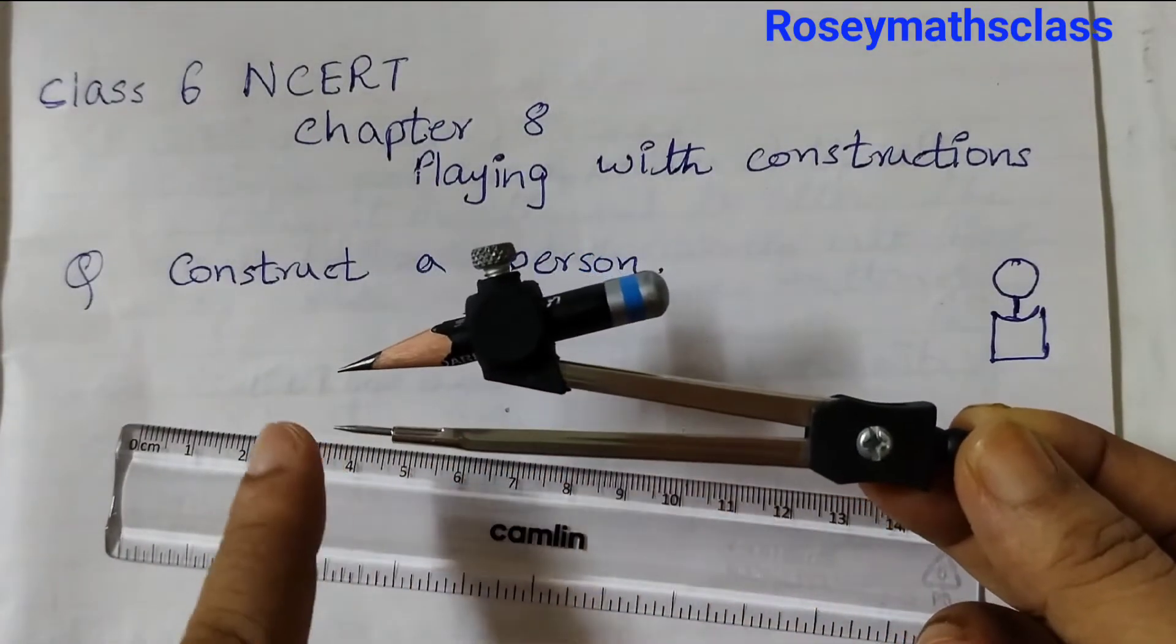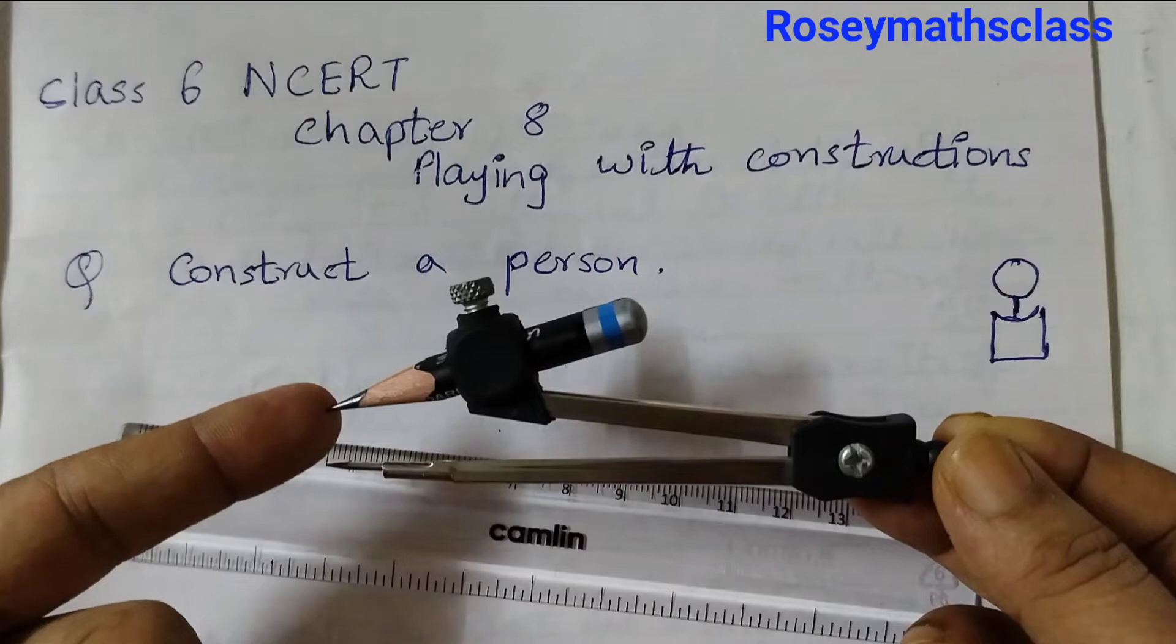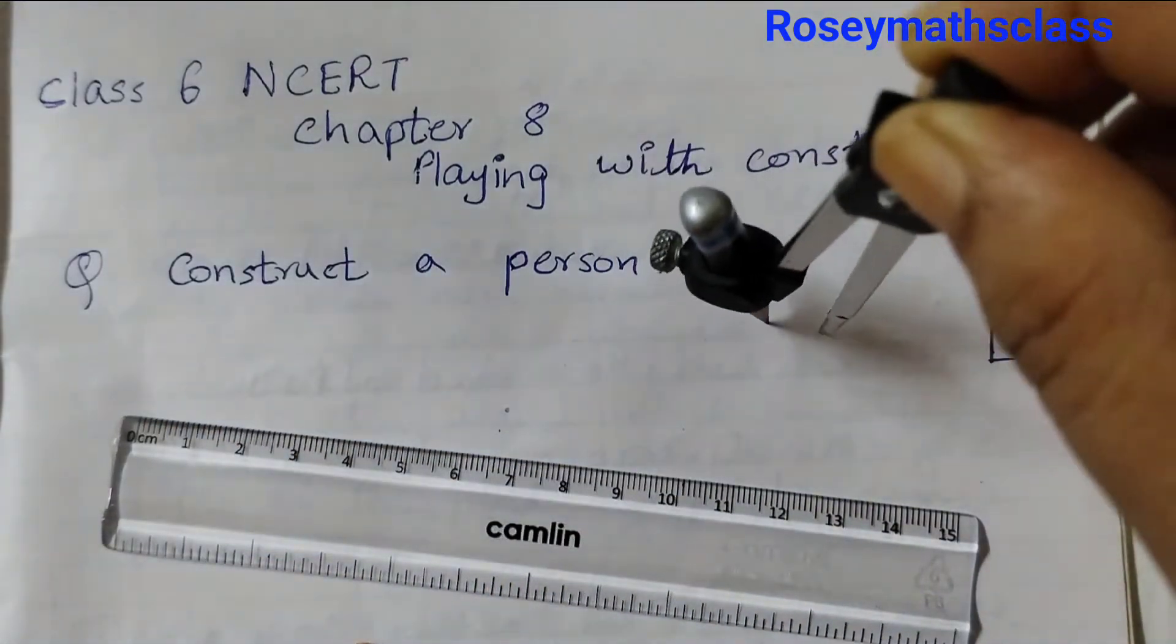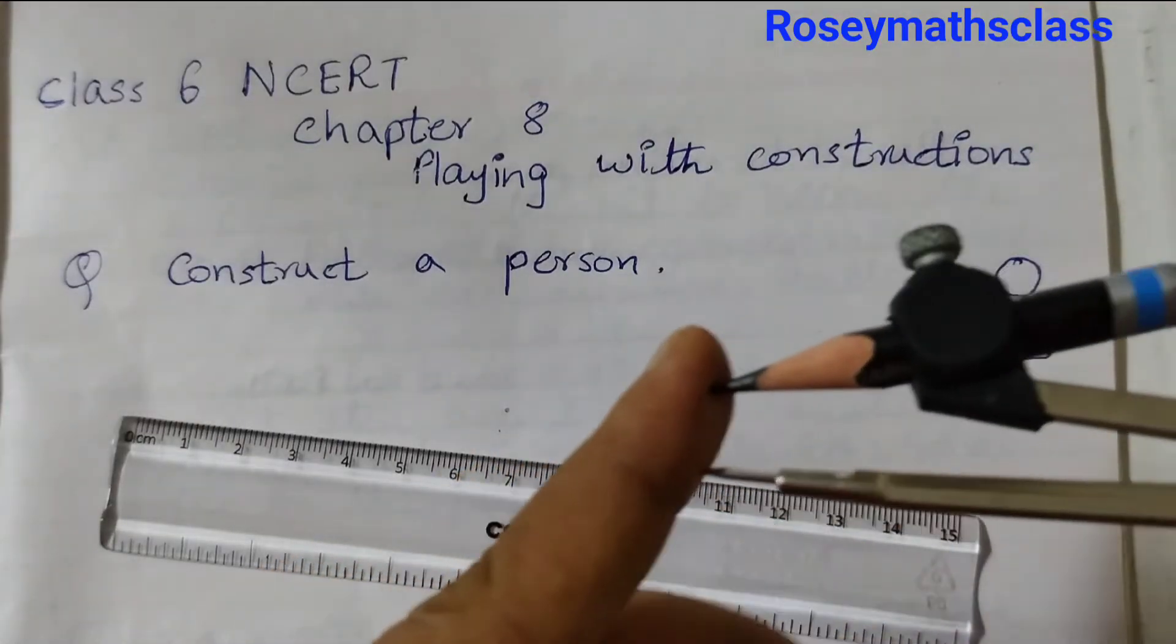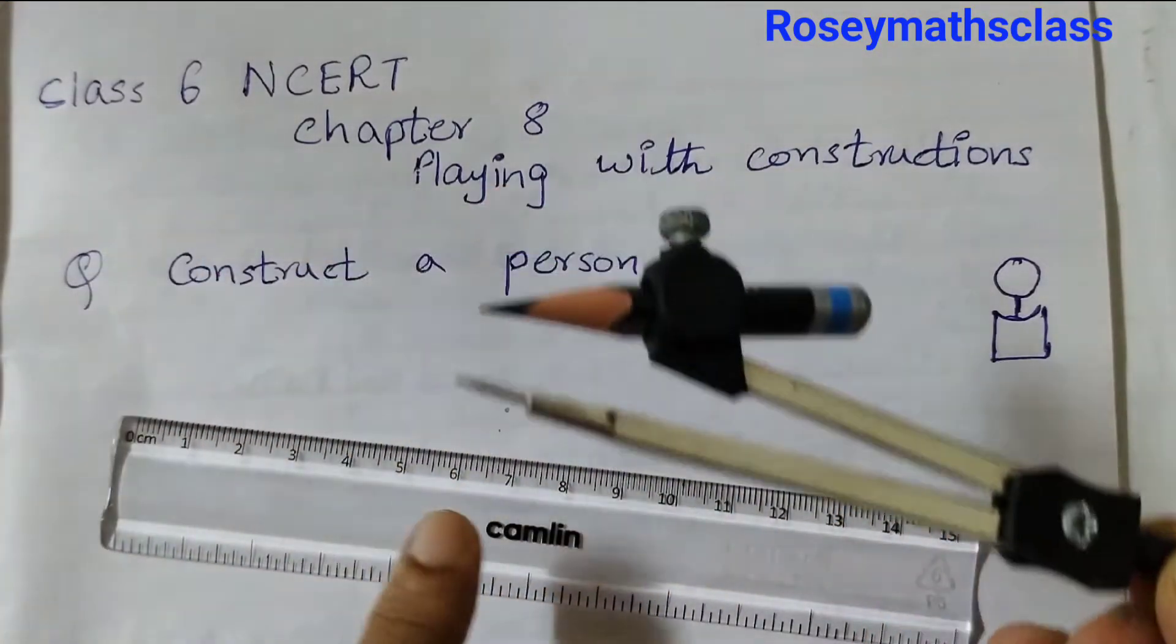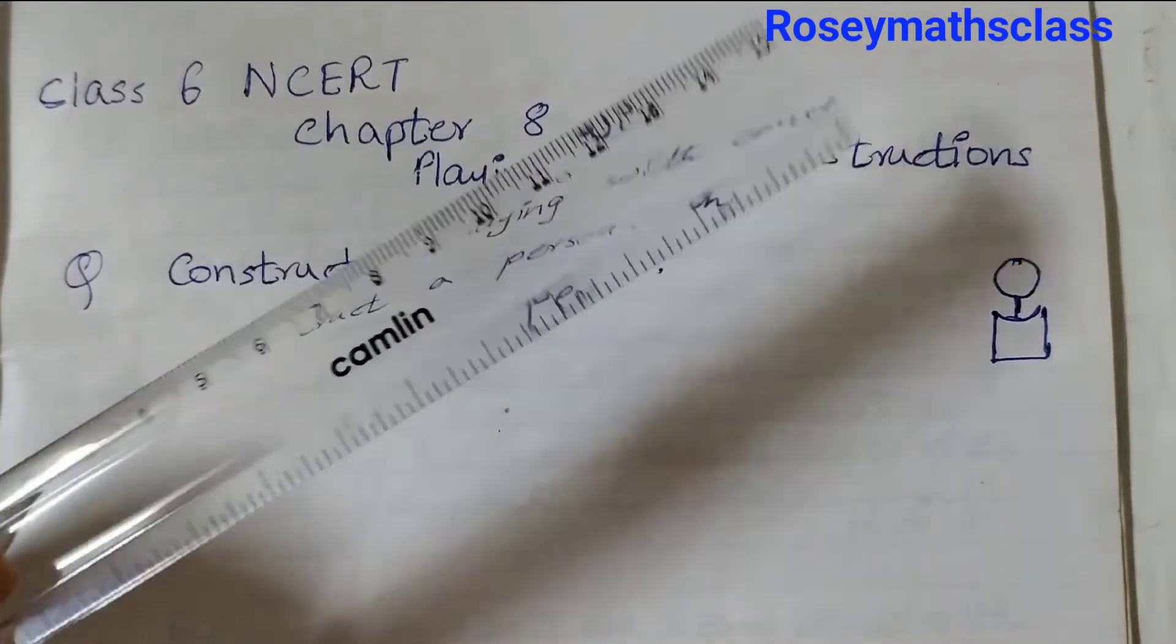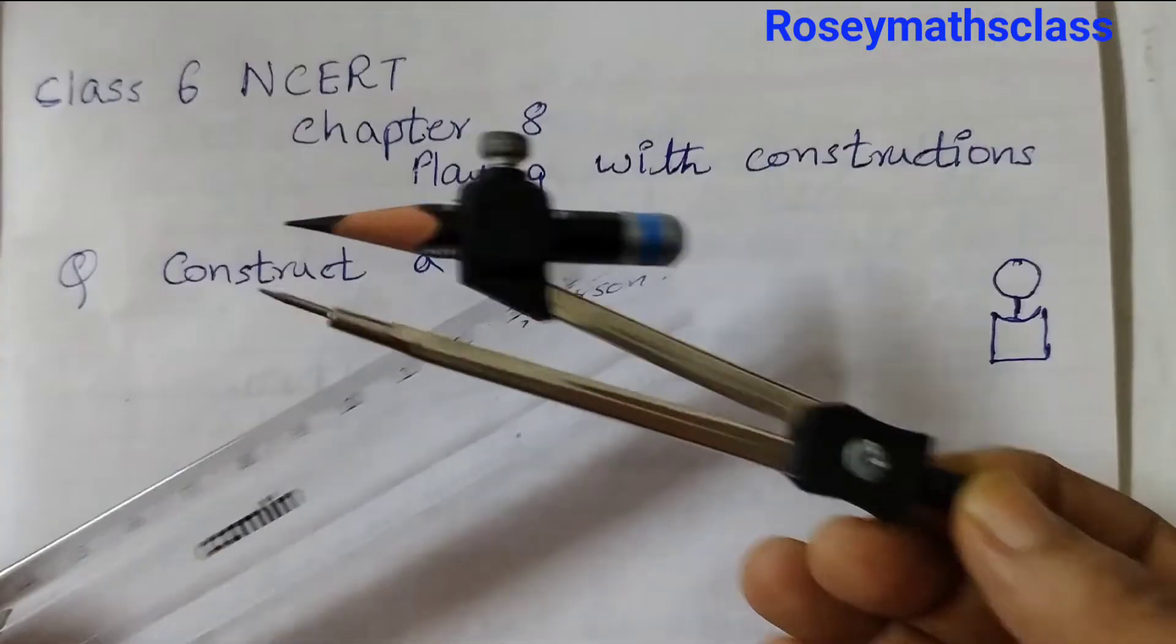This is called a compass. It has a metal point and this is for the pencil. The pencil goes inside this holder, and both should be at the same level. This is a compass and this is a ruler. Wherever the word 'construct' appears, you need to use only the scale and compass.